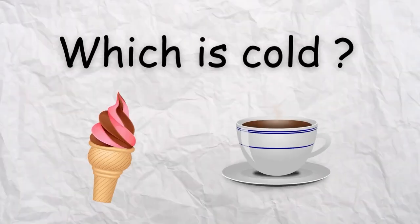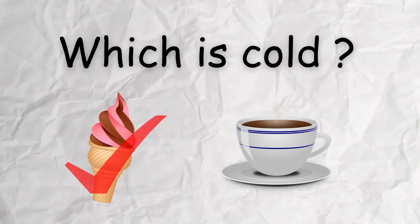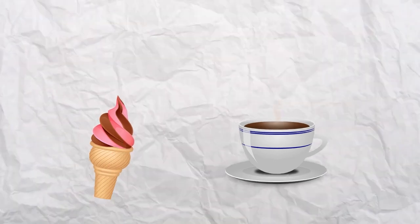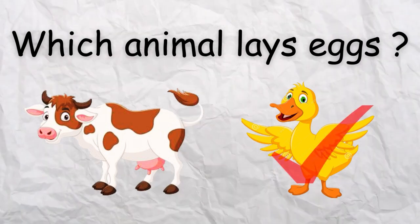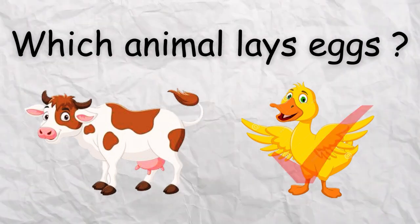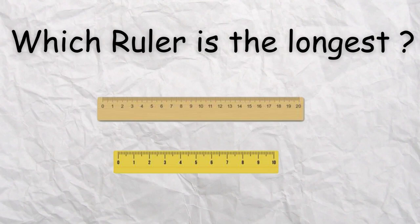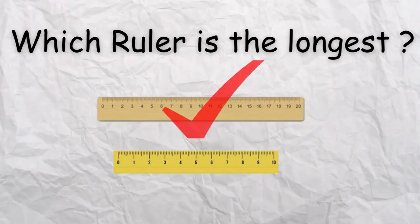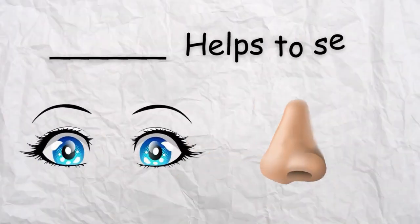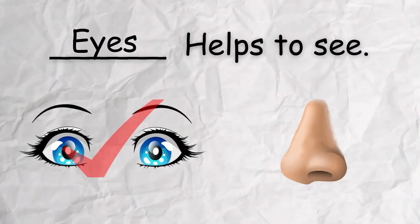Which is cold? Which animal lays eggs? Which ruler is the longest? What helps to see? Who can fly?